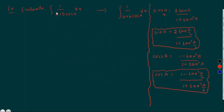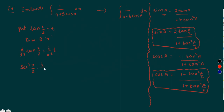The given question is in the form of 1 by (a plus b cos x) dx. So now put tan(x/2) equals to t. Differentiation with respect to x: d/dx of tan(x/2) equals d/dx of t. d/dx of tan x means secant square x, here x/2. So secant square(x/2), then differentiate x/2 with respect to x, giving 1/2, equals dt/dx.